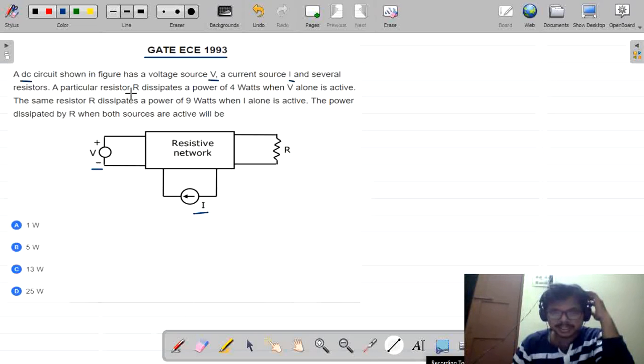A particular resistor R dissipates power of 4 watts when V is acting alone. It is indicating that it is a particular resistor which is outside of the resistor network dissipating a power of 4 watts. When only V is acting, it is dissipating a power of 4 watts. In this case, the current source is open circuit.